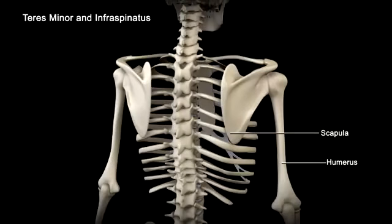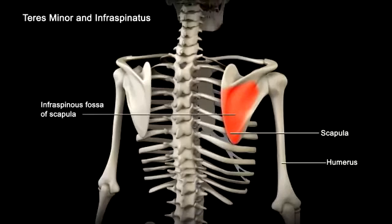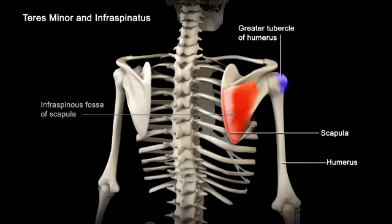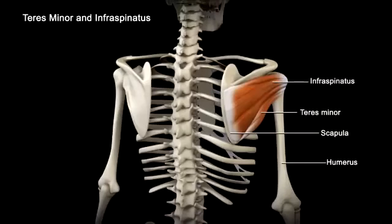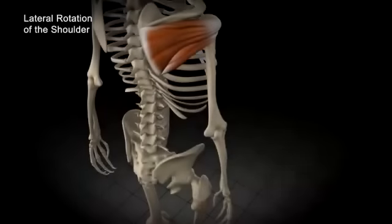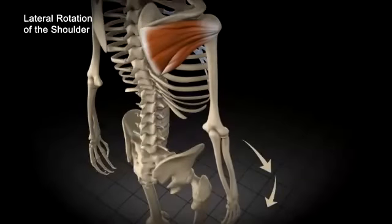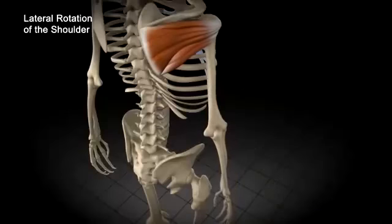The teres minor and infraspinatus originate on the inferior part of the scapula and insert on the greater tubercle of the humerus, providing the movement of lateral rotation of the shoulder. The movement of lateral rotation causes the palm of the hand to turn from a medial to an anterior position.